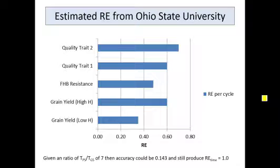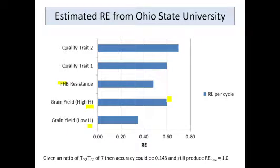Here's some data from my Ohio State University wheat breeding program, looking at the relative efficiency of genomic selection on a per cycle basis. For the different traits — fusarium head blight resistance, a couple of quality traits, grain yield under high heritability conditions, and low heritability conditions — this is almost always true: your relative efficiency tends to go down as heritability of your trait goes down. With high heritability, we're actually getting a relative efficiency per cycle for yield of 0.6, which is quite good for a trait like yield.